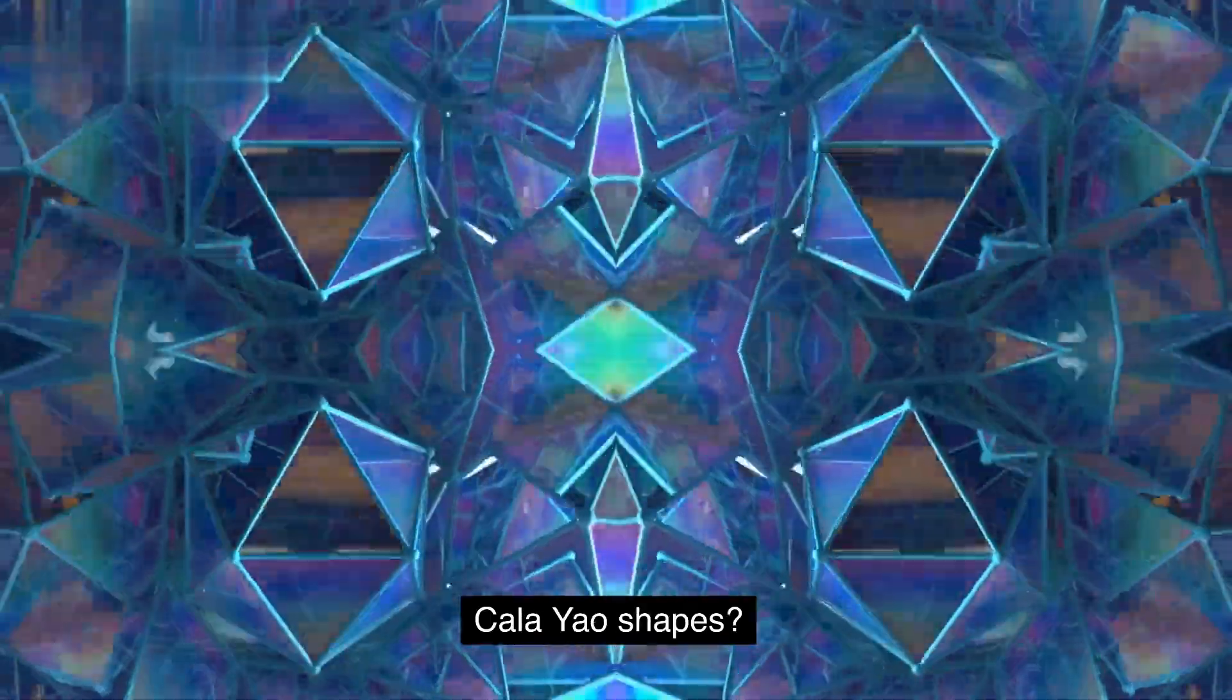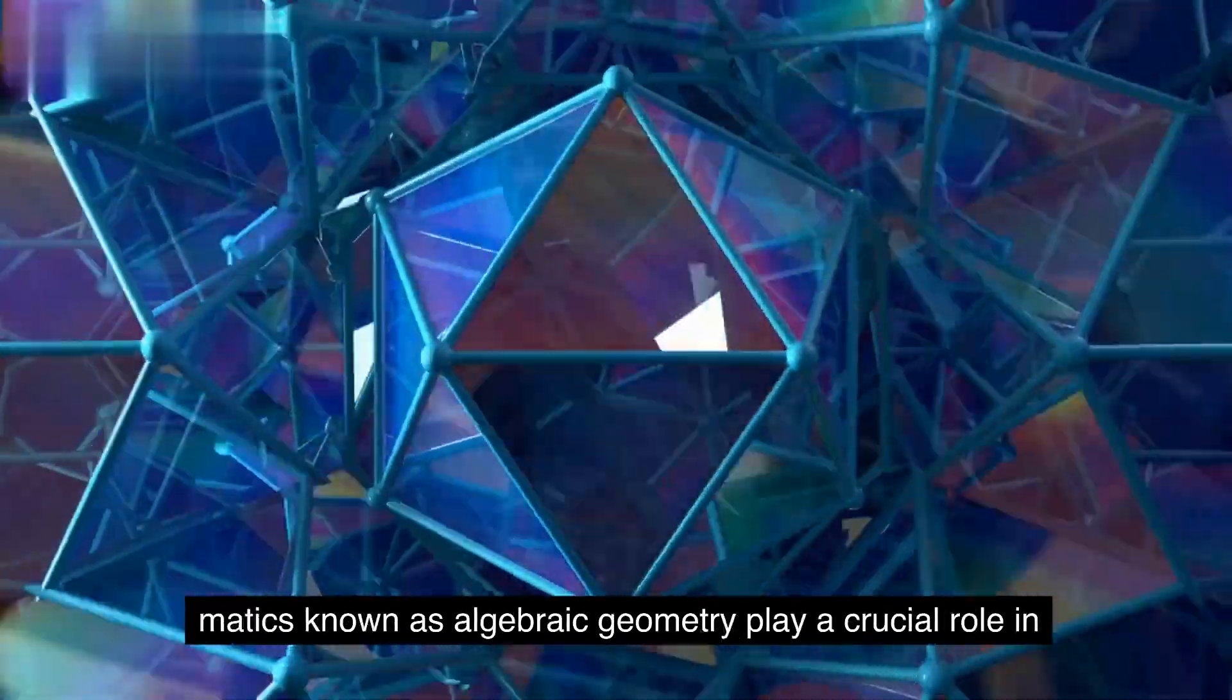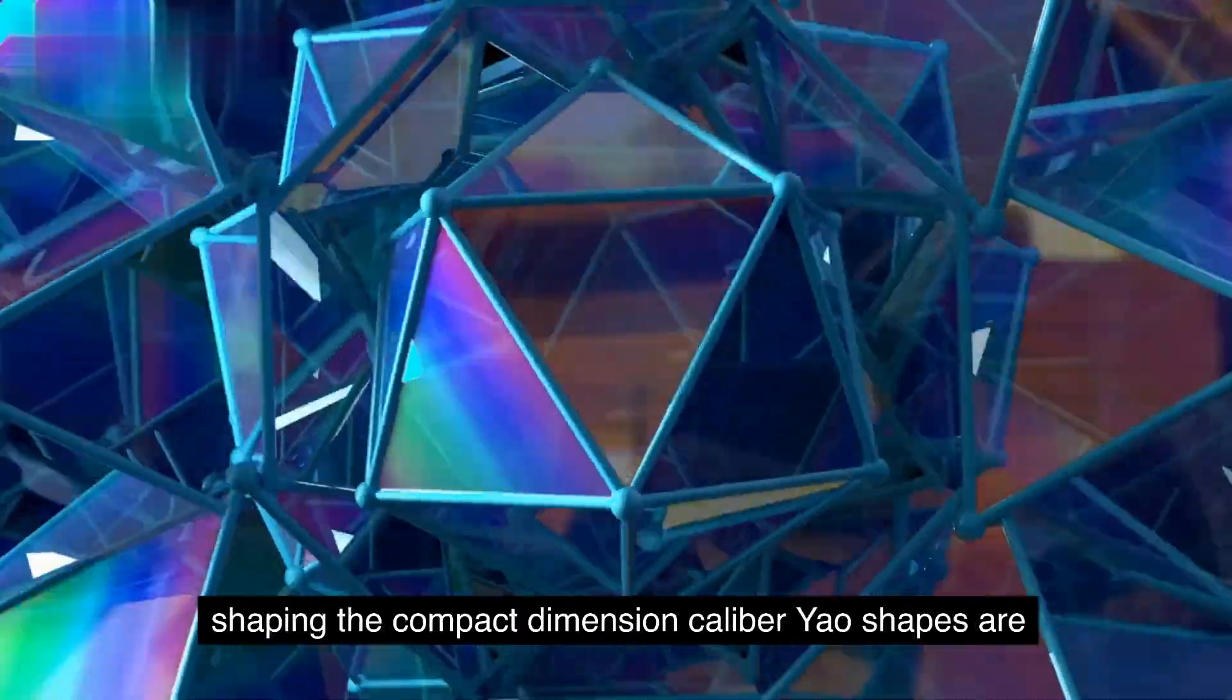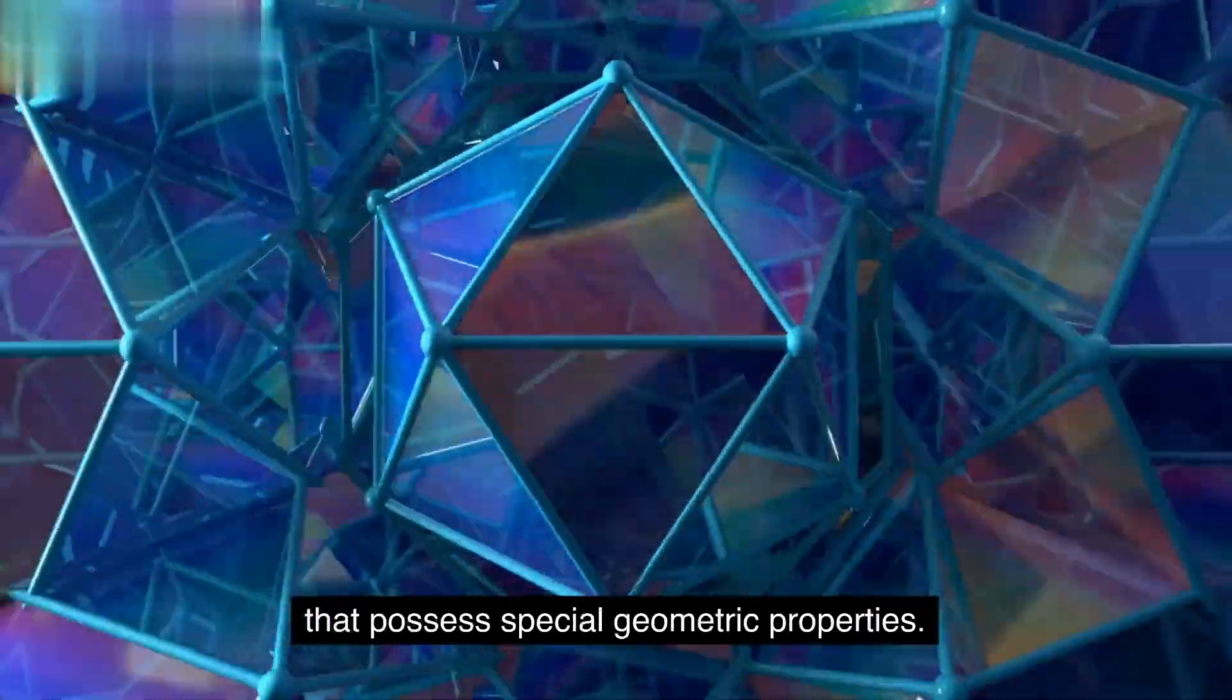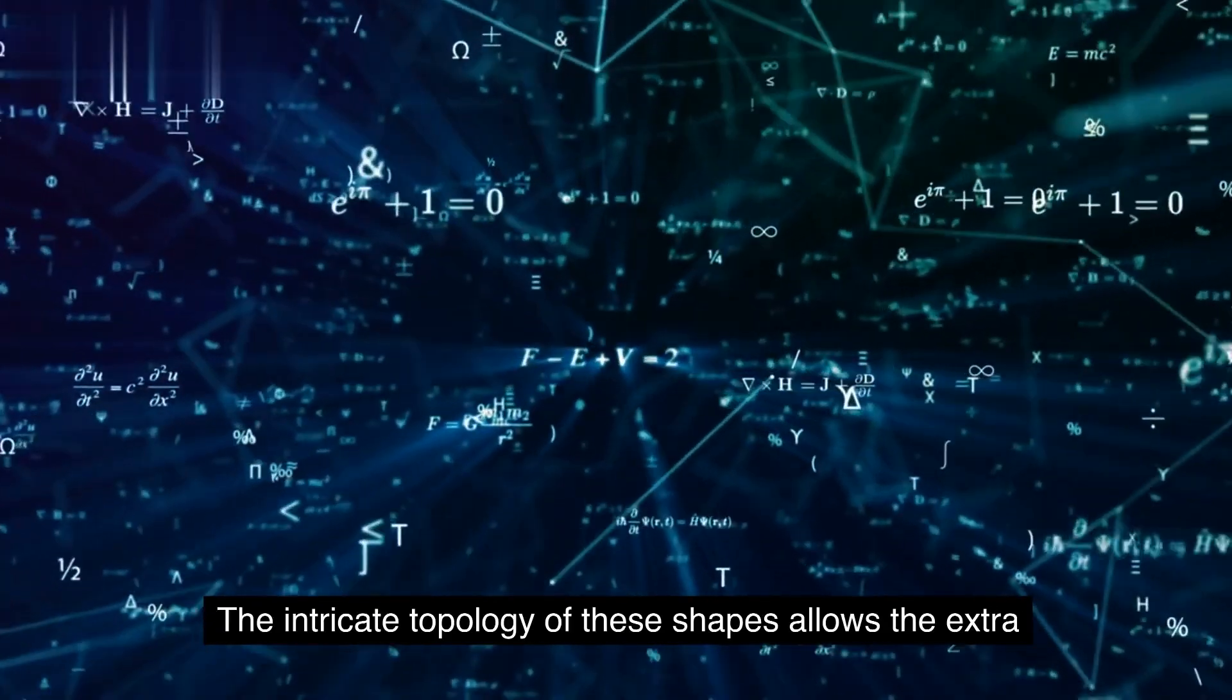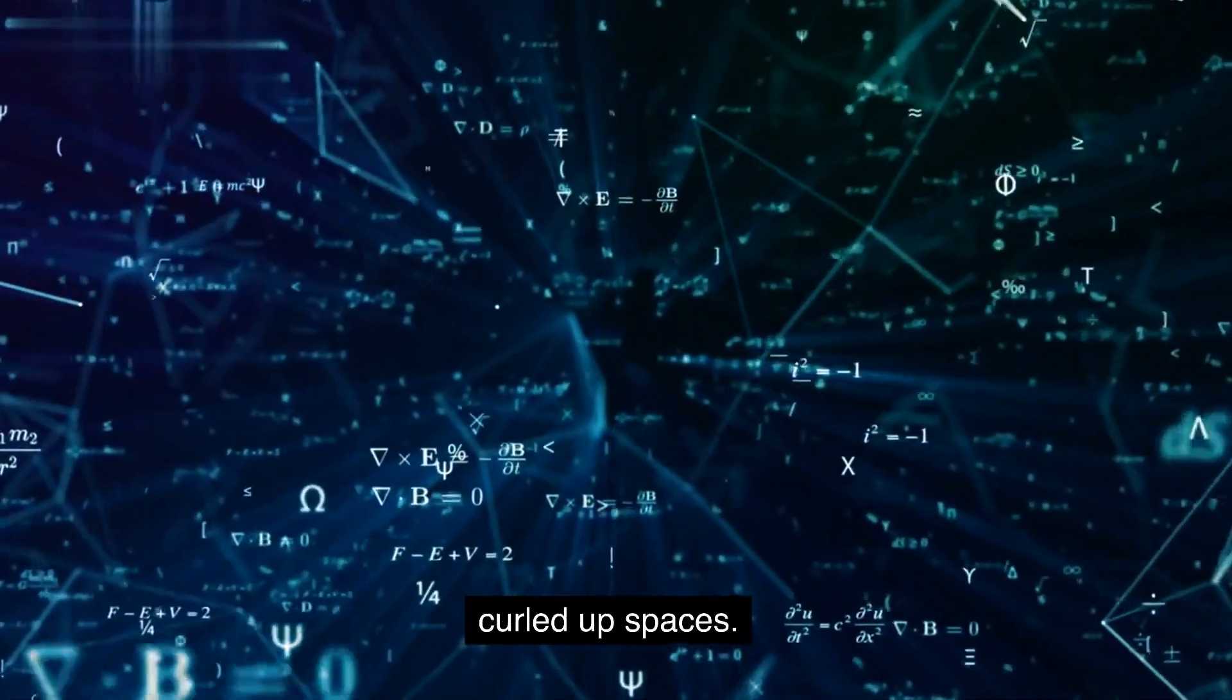Enter the Calabi-Yau shapes. These shapes, which belong to a branch of mathematics known as algebraic geometry, play a crucial role in shaping the compactified dimensions. Calabi-Yau shapes are complex six-dimensional spaces that possess special geometric properties. The intricate topology of these shapes allows the extra dimensions to be hidden within them, appearing as tiny, curled up spaces.